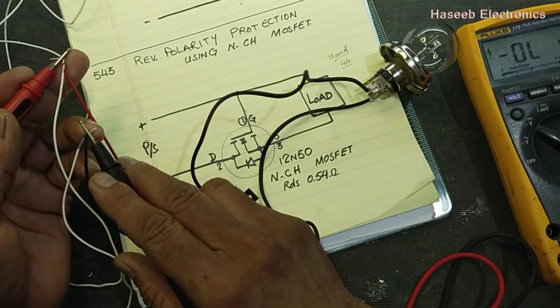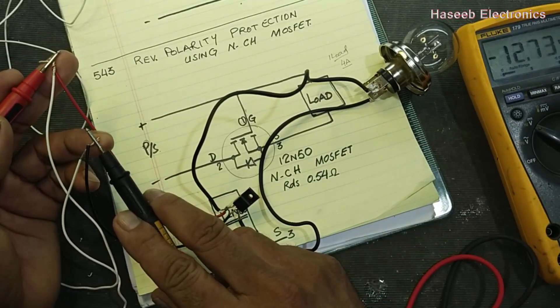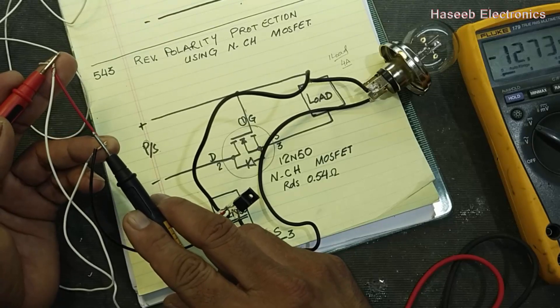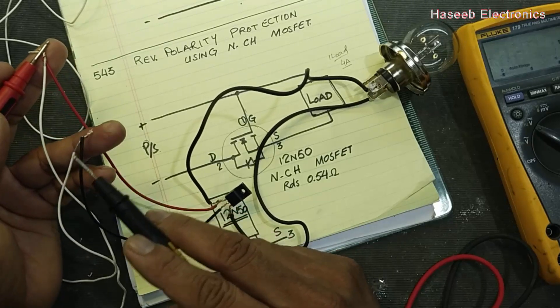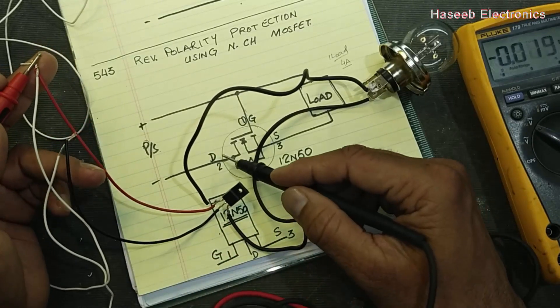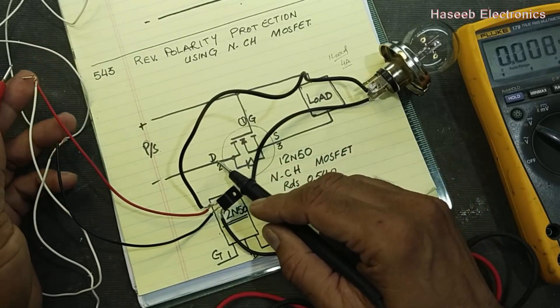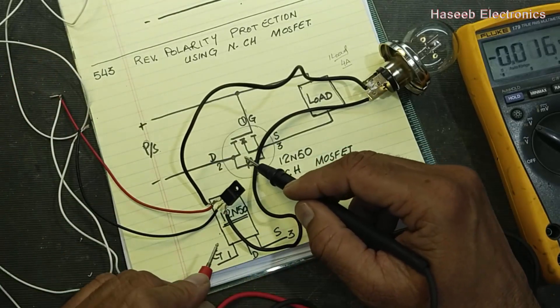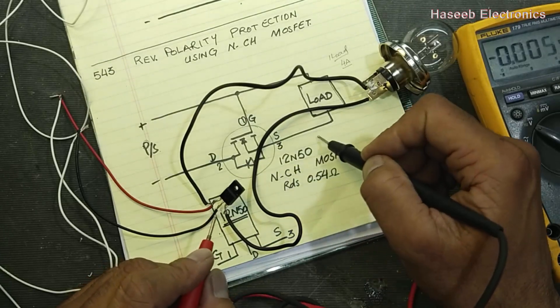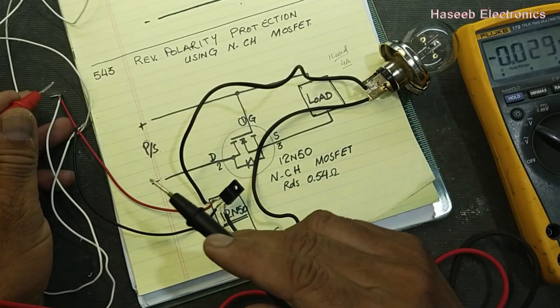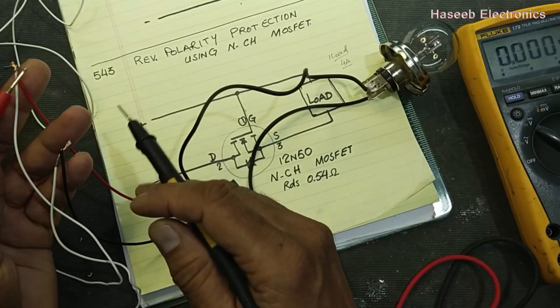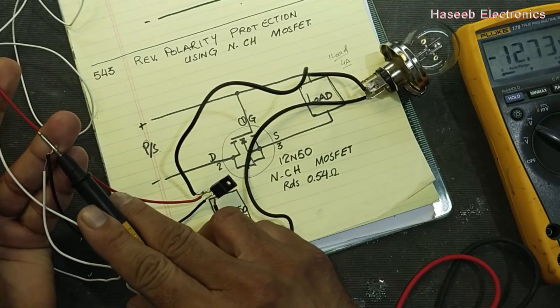In the input we have 12 volts, and now gate has negative 12 volts because this line is now positive. At the drain we applied positive voltage, so this time it is not allowing current to pass. This time the polarity is reversed.